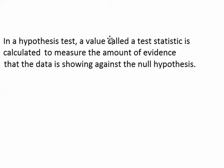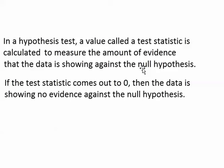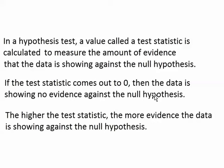Now we'll get into the calculations. In a hypothesis test, a value called a test statistic is calculated to measure the amount of evidence that the data is showing against the null hypothesis — in other words, the amount of evidence that something is going on. If the test statistic comes out to zero, the data is showing no evidence against the null — there is no evidence to say that anything is happening, and the data is perfectly consistent with the null. The higher the test statistic, or the further it is from zero, the more evidence there is against the null hypothesis.